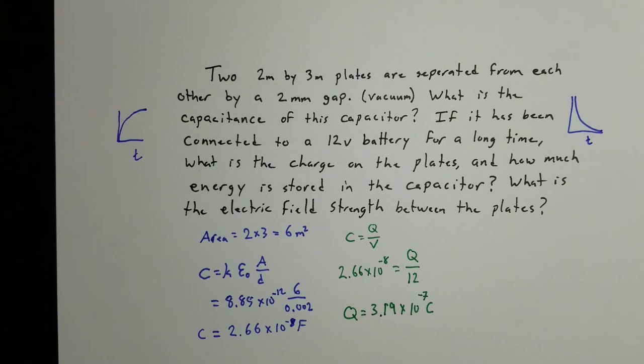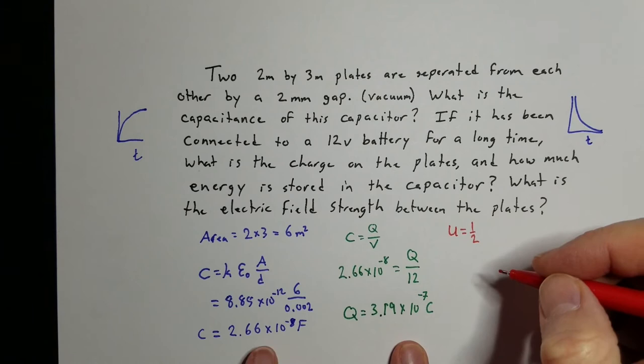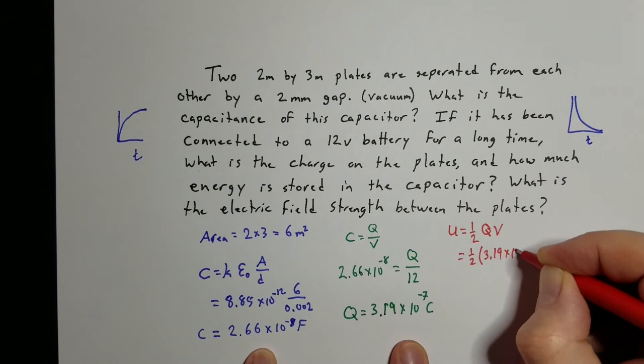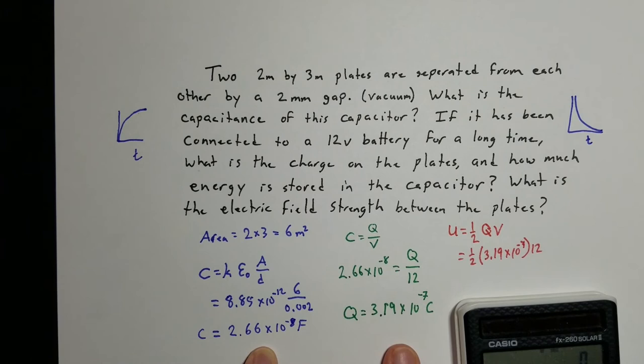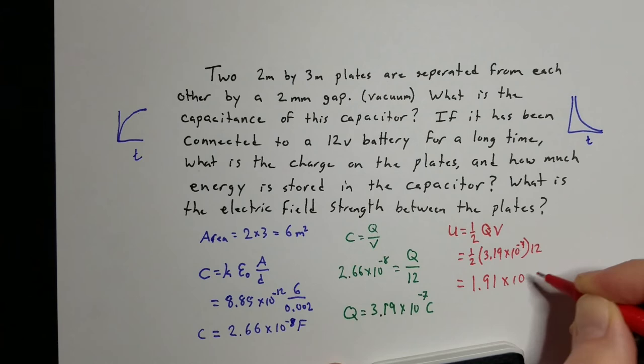For the potential energy, since I know both Q and V, I'll use U = ½QV. So U = ½ × 3.19 × 10⁻⁷ × 12, which gives a potential energy of approximately 1.91 × 10⁻⁶ joules of energy stored on that capacitor.